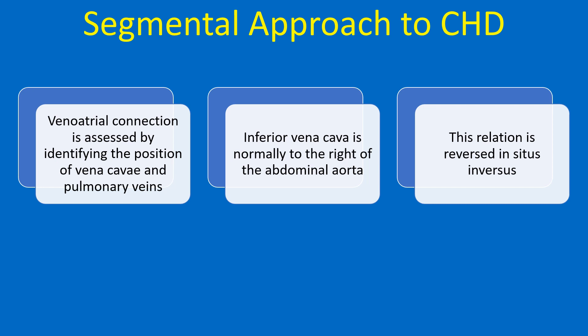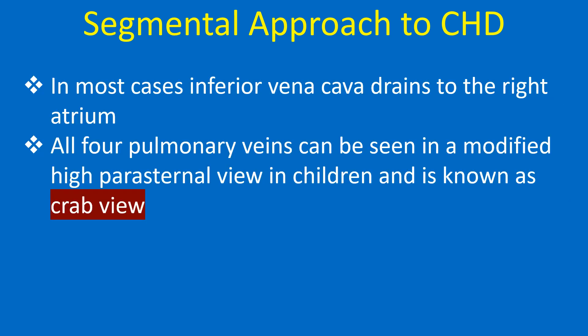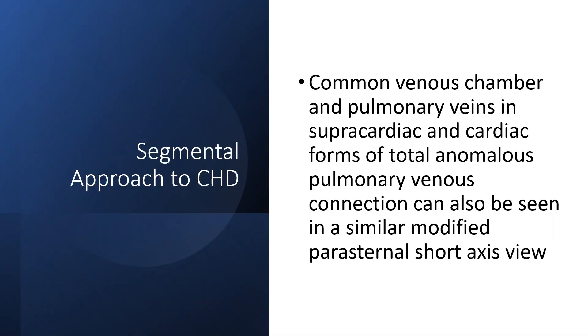Veno-atrial connection is assessed by identifying the position of the vena cavae and pulmonary veins. Inferior vena cava is normally to the right of the abdominal aorta; this relation is reversed in situs inversus. In most cases, inferior vena cava drains to the right atrium. All four pulmonary veins can be seen in a modified high parasternal view in children, known as the crab view. Common venous chamber and pulmonary veins in supracardiac and cardiac forms of total anomalous pulmonary venous connection can also be seen in a similar modified parasternal short axis view.